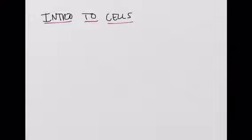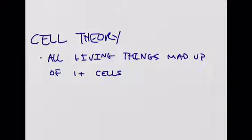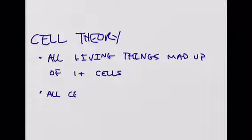But before we even talk about the components of cells or the different types of cells that are out there, there's one thing that we need to discuss. And it might seem a bit absurd that we even have to talk about this. But we have a cell theory in biology. So I'm going to write that down. And the first part of that cell theory is that all living things are made up of one or more cells.